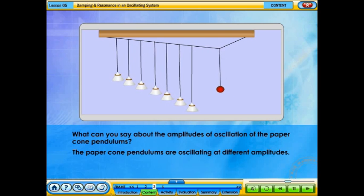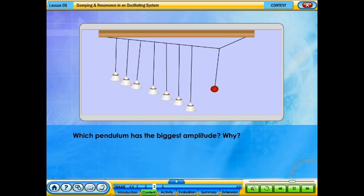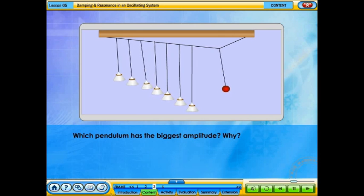The paper cone pendulums are oscillating at different amplitudes. Which pendulum has the biggest amplitude? Why?